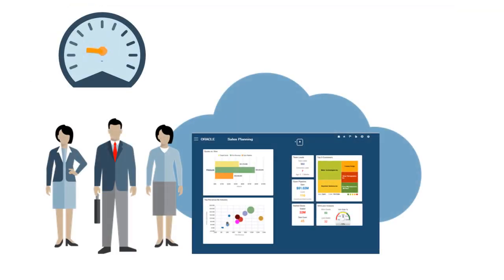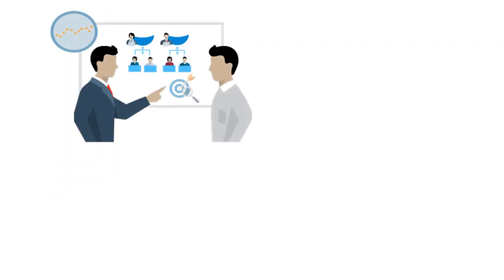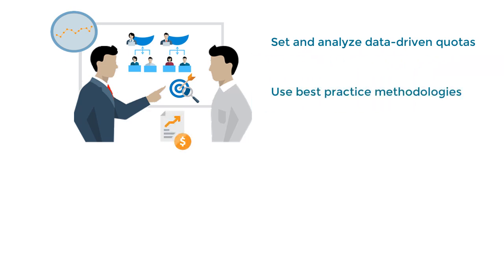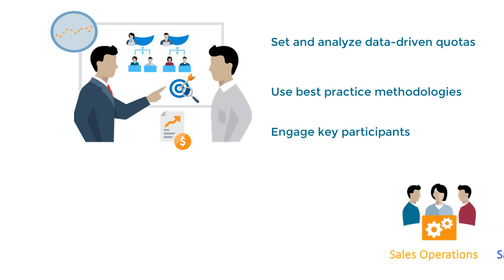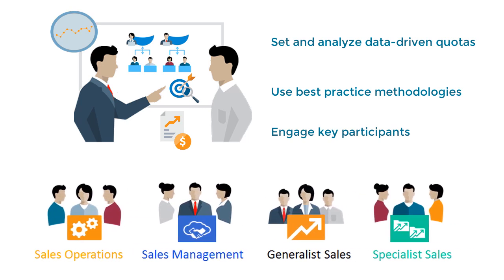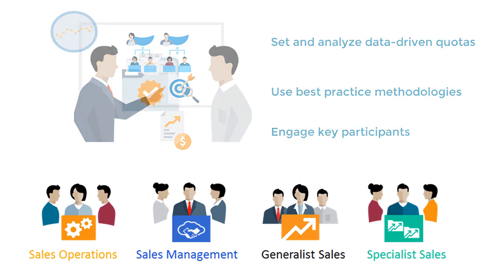Sales planning addresses these challenges to optimize sales performance management. Quota planning is an extensible, reliable way to set and analyze data-driven, intelligent quotas using best practice methodologies and by engaging key participants, such as sales operations, sales management, generalist sales, and specialist sales.